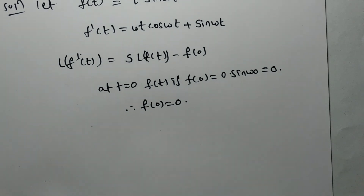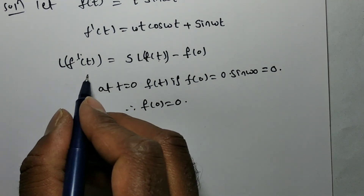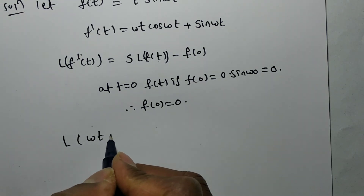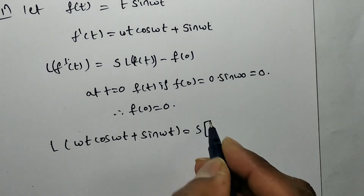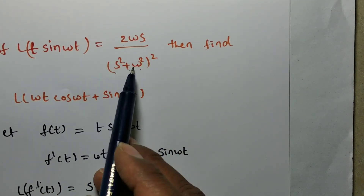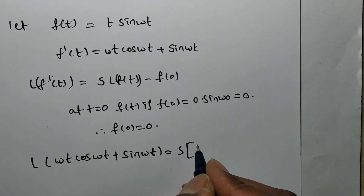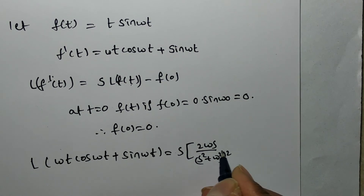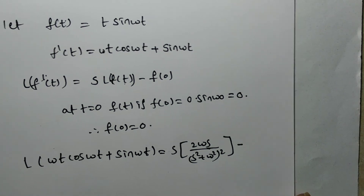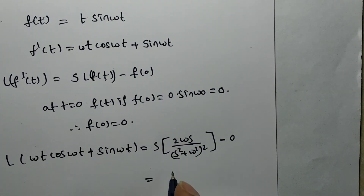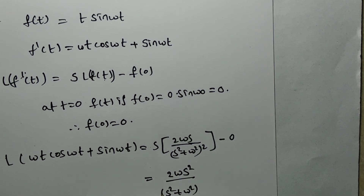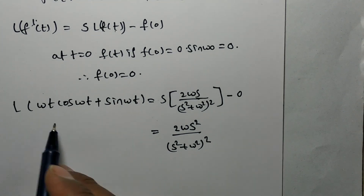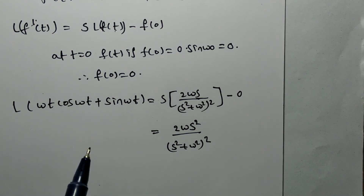We need to find L{f'(t)} = L{ωt·cos(ωt) + sin(ωt)}. Using the formula L{f'(t)} = s·L{f(t)} - f(0): substitute L{f(t)} = 2ωs/(s²+ω²)² and f(0) = 0. This gives s·[2ωs/(s²+ω²)²] - 0 = 2ωs²/(s²+ω²)².